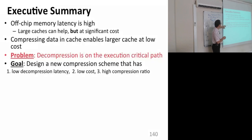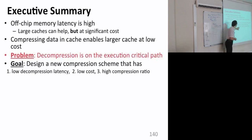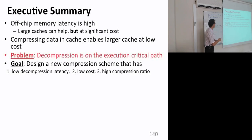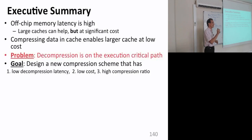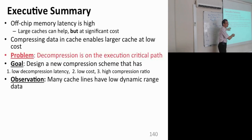We would like to design a new compression scheme that has low decompression latency, low cost, and high compression ratio. You could have low decompression latency by identifying only the zero blocks and decompressing them — you can use one bit to figure out how to decompress the block — but that doesn't get high compression ratio. So we'd like to get all of them at the same time.